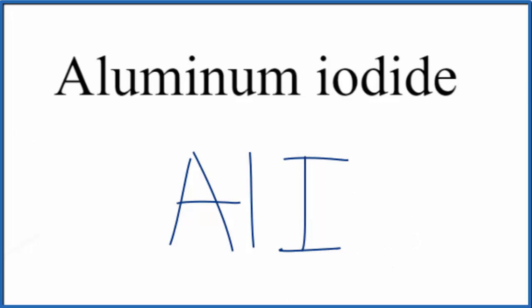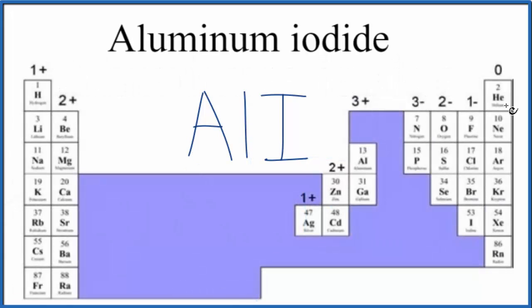Let's look at the periodic table. Aluminum is in group 13, or sometimes called 3A. Aluminum is going to be 3+, so we have 3+ for the aluminum. And then the iodide ion is 1-, so we have the charges.